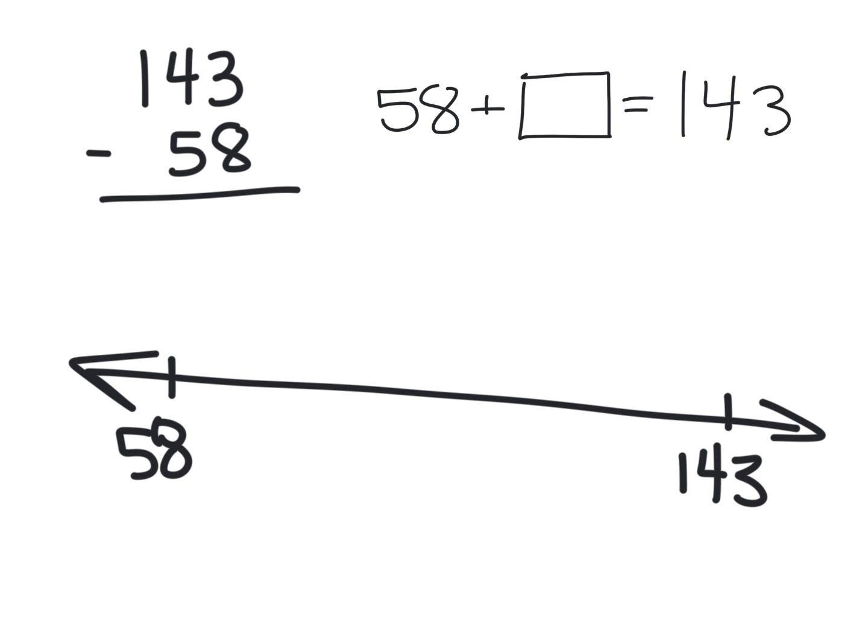Now the reason why this is called an empty number line is we're not going to ask our students to draw things in a proportional manner. We can see that this distance is quite large from 58 to 143, but we're not going to count the individual things proportionally. We're just going to use an empty number line to record our thinking.